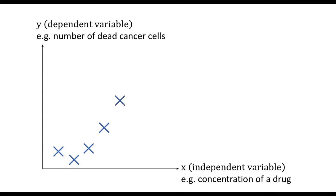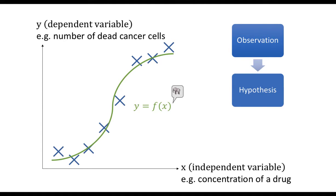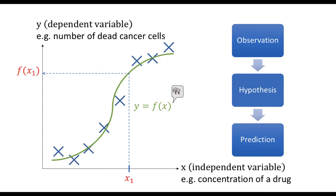You can understand regression as an application of the scientific method. These data points are your observations. You fit these data points with a model, and you suppose that any future observations you make will also follow this particular model — this is the hypothesis. Usually the purpose of regression is to make predictions. A prediction is a specific case under the assumption that the hypothesis is true. So in this case, based on the hypothesis that the model correctly depicts the entire picture, we predict that if we input the drug concentration as x1,